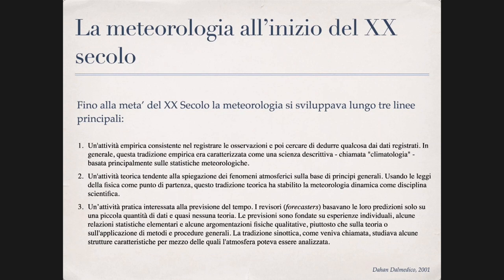There was another line — a practical activity especially interested in the forecasting of meteorological conditions. These forecasts based their predictions on empirical activities, that is, on the past, using little theory but a lot of personal experience, statistical methods, and qualitative arguments. This tradition was called the synoptic tradition, and it had a very practical goal: to make weather forecasts.